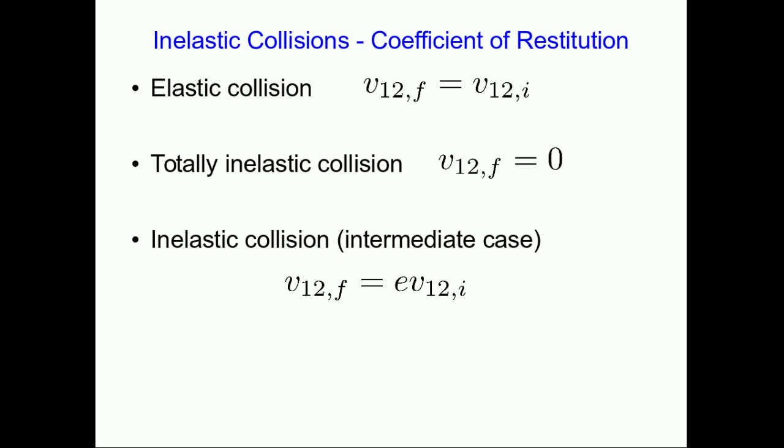The final relative speed is just some fraction of the original relative speed. And so I'm putting this number e in front. That isn't the e 2.71. No, this is just a coefficient. It's some number that says what fraction of the initial relative speed is the final relative speed. We call it the coefficient of restitution.